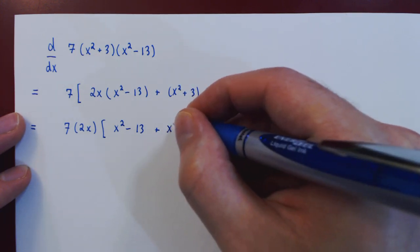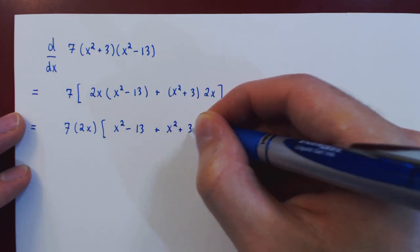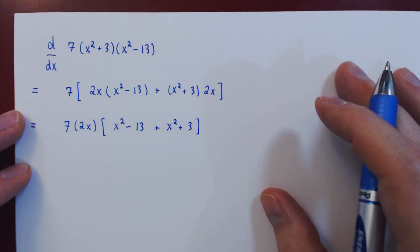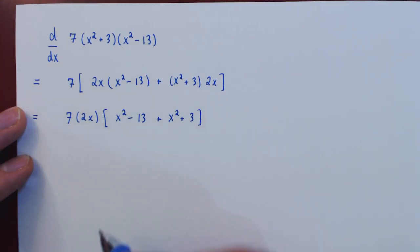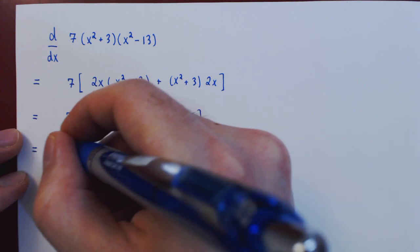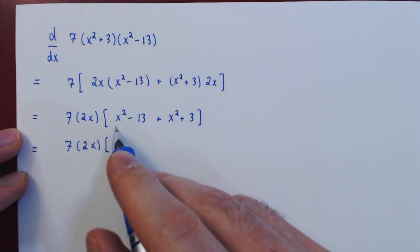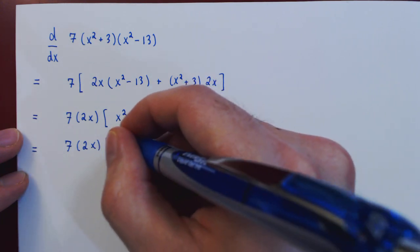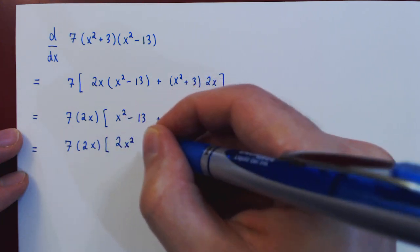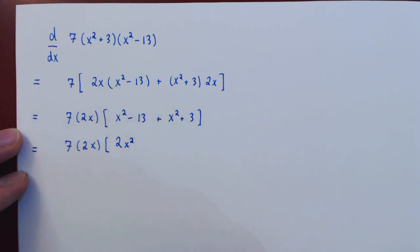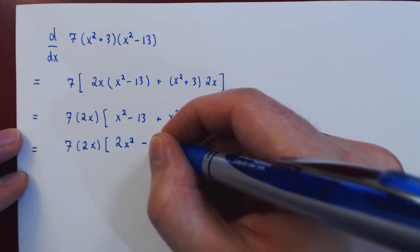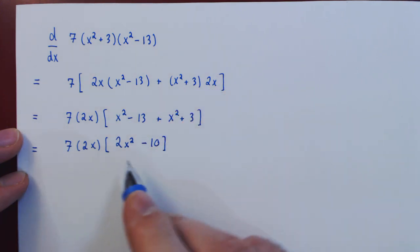So we can regroup the two quadratic terms and the two constant terms, so we have 2x squared, negative 13 plus 3 is negative 10. And if you notice once again we can factor a common multiple of 2.